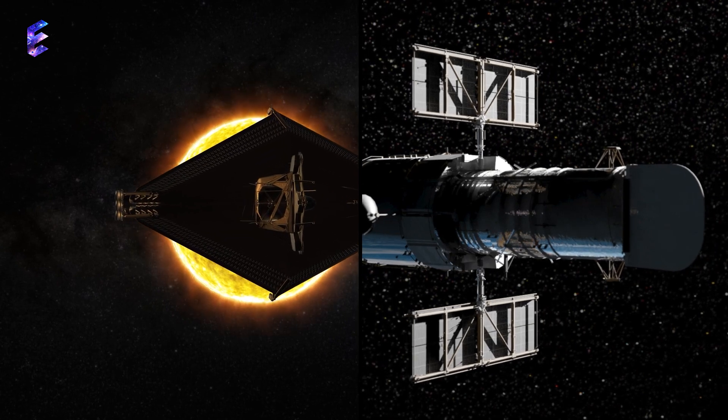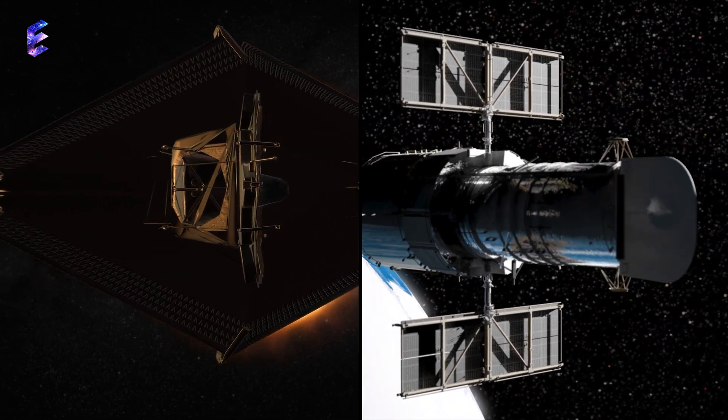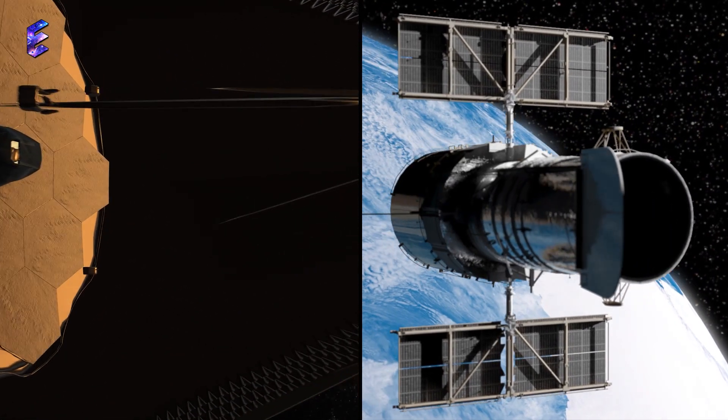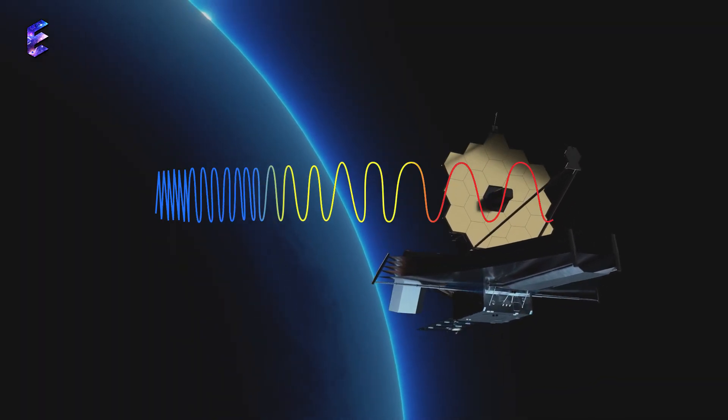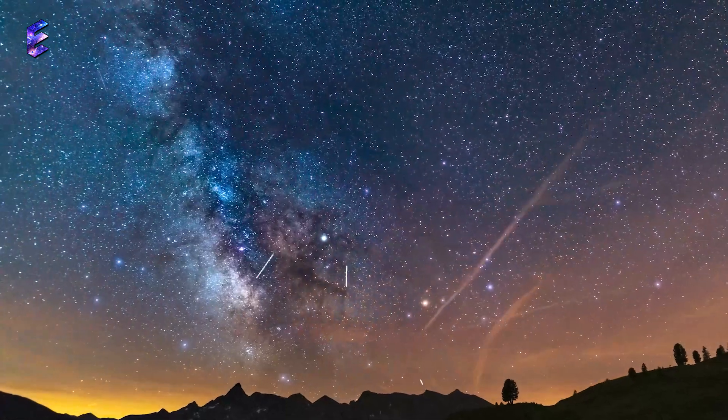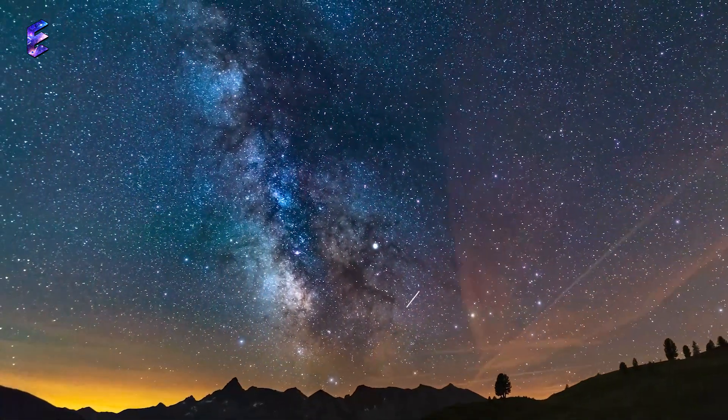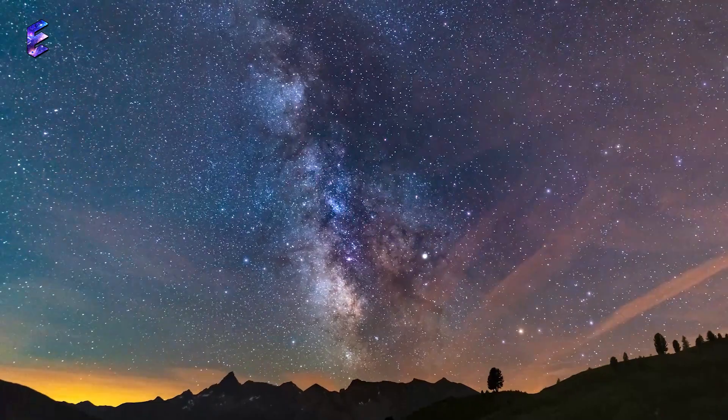The James Webb Telescope can collect about ten times as much light as the Hubble Space Telescope and is much more sensitive at redder, longer wavelengths in the infrared spectrum. This allows scientists to access an entirely new window of data of the early universe.